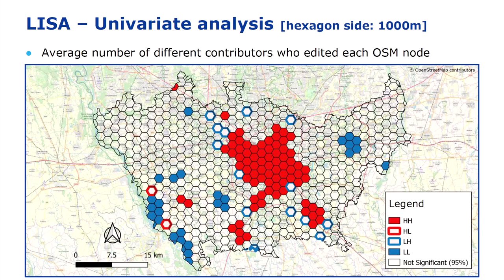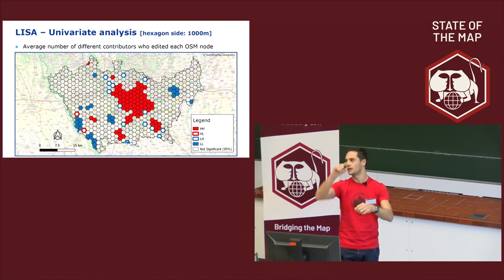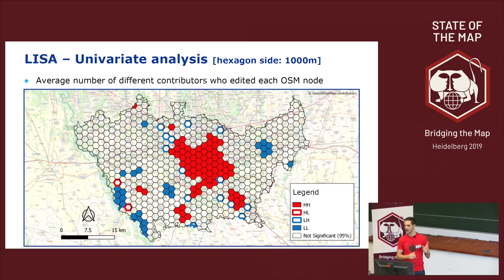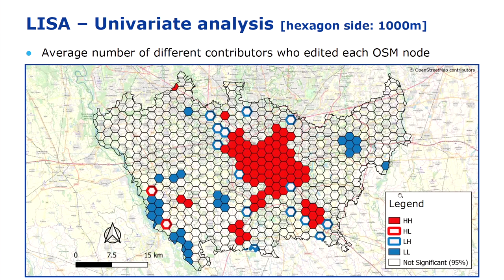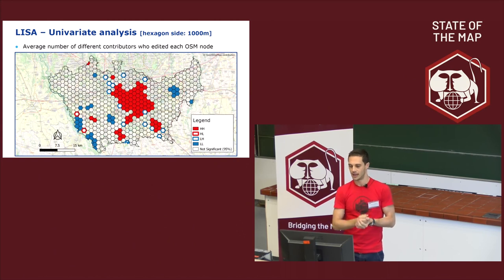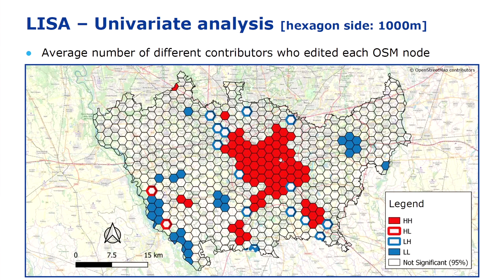Looking at hexagons of 1,000 meter side and considering the six adjacent hexagons as neighbors: for the average number of different contributors per OSM node in Milan, red areas (HH — high-high clusters) correspond to the city center of Milan. This is not surprising — city centers are areas where more people map because more people live and visit there. Blue areas are low value clusters in peripheral, mainly agricultural areas — there are fewer nodes to map and fewer active contributors.